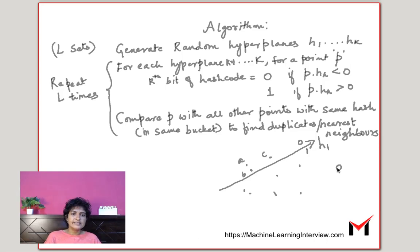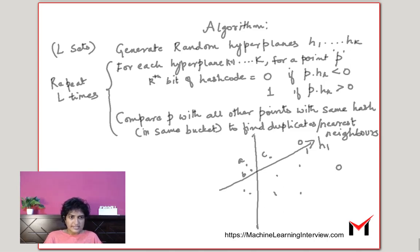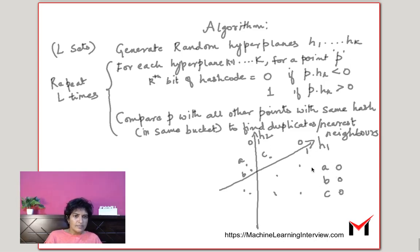This hyperplane helps us find the first bit in the hash. Everything to the left of this hyperplane is 0 and to the right is 1. So all these points A, B, and C will get 0 as the first digit. Now suppose we have another hyperplane H2. This side is 0 and this side is 1. So A and B have 0 as the second digit, while C will have a 1 because it is on the one side of hyperplane H2. We can continue doing this until we have K hyperplanes.